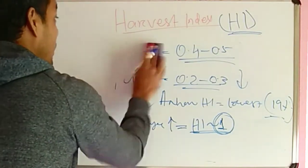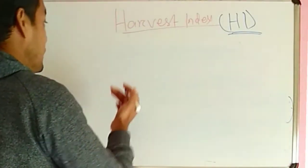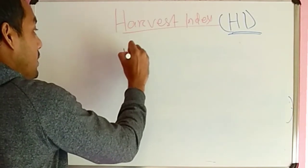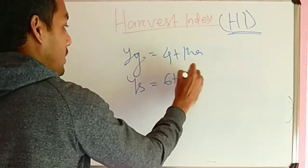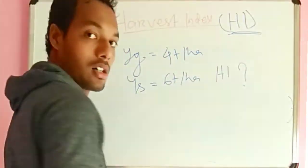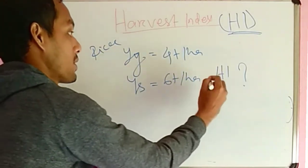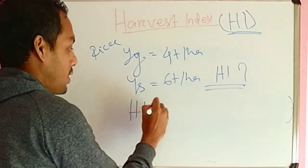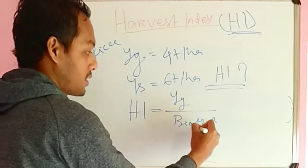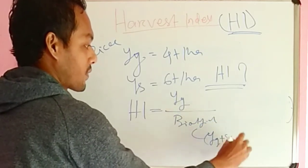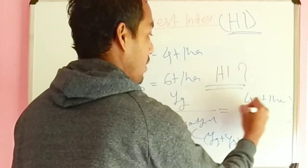Let me give an example of how to calculate harvest index. Suppose in an exam it is given that grain yield = 4 tonnes per hectare and straw yield = 6 tonnes per hectare for a rice crop. Harvest index = grain yield divided by biological yield = grain yield divided by (grain yield + straw yield) = 4 divided by (4 + 6) = 4/10 = 0.4.